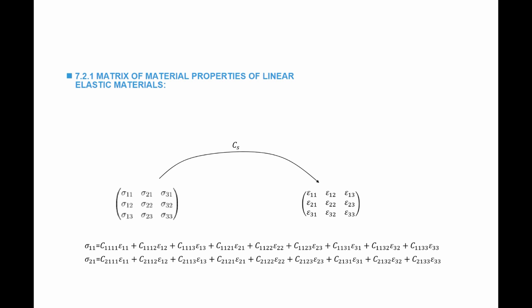Similarly, for the stress component sigma_21 I will need nine different constants to relate that component of the stress to the nine components of the strain, and so on. Because I have nine components of the stress and nine components of the strain, I will need 81 constants in general to describe the relationship between a nine-by-nine matrix with another nine-by-nine matrix.